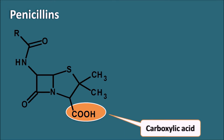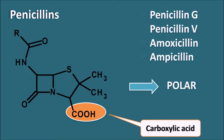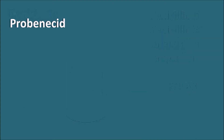This acidic group makes the penicillins polar in nature. Drugs in this category include penicillin G, penicillin V, amoxicillin, ampicillin, and many other drugs classified as penicillins.